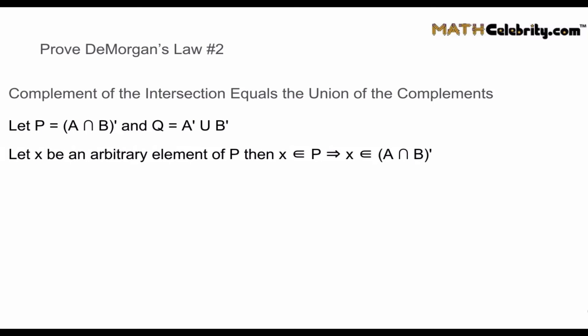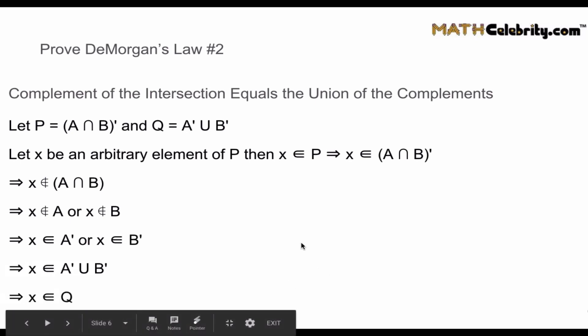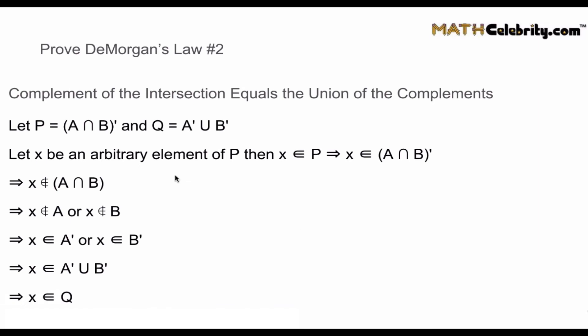Let X be an arbitrary element of P, meaning X is an element of (A intersection B) complement. Because X is in that complement, X cannot be an element of A intersection B — so X cannot be in A or cannot be in B. That means X is an element of A complement or an element of B complement. Since 'or' corresponds to union, X is an element of A complement union B complement, which is Q. So we've proven the second DeMorgan's Law: the complement of the intersection equals the union of the complements.